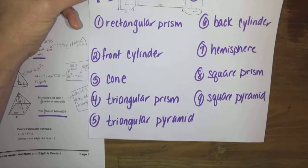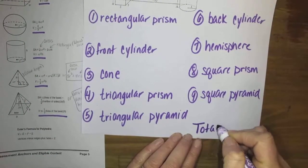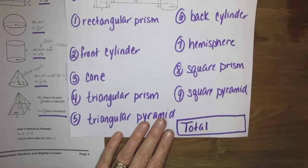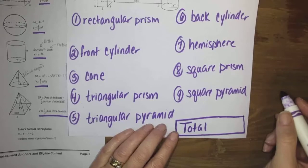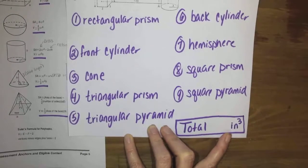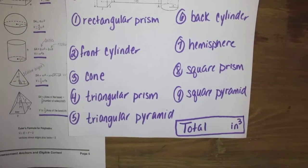Once you find the volume of all nine of those, please add them together and give me the grand total. We're thinking of this as a sandcastle, so all the measurements are in inches. So when you get the total volume, please make sure your final answer is inches cubed because that's what volume is. It's its capacity, how many cubic inches could fit into that.